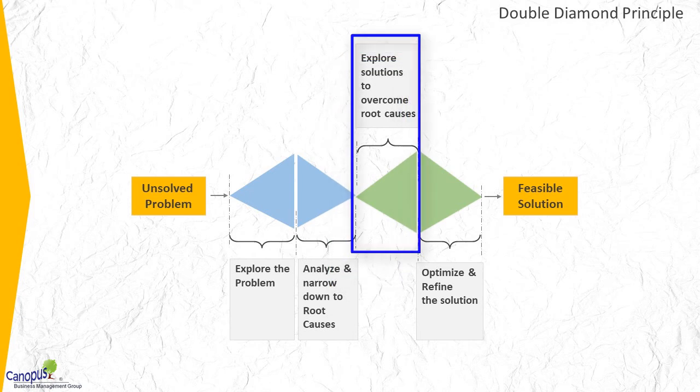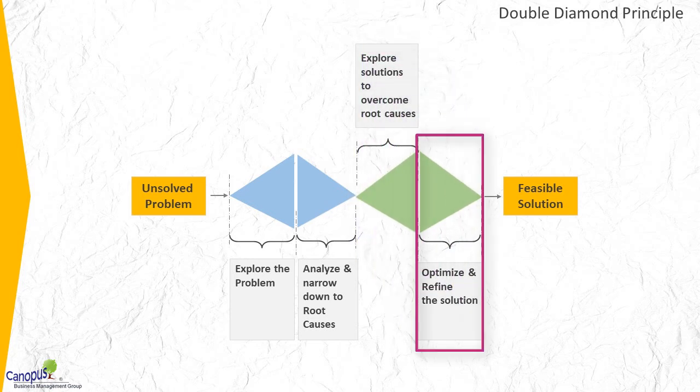Now we start with the second diamond. Having identified the root causes, we again diverge and try to identify all possible solutions. That is where we start using SCAMPER. Once we have identified all possible solutions using our creativity hat, we go into the mode of selecting some of the best ideas, so we start narrowing down or converging again. That completes the second cycle, and by the end of the second diamond, you are ready with the solution to be implemented.